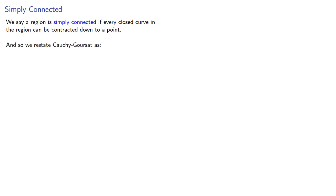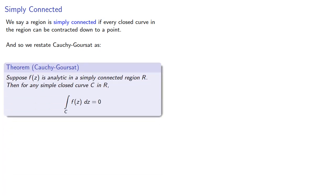So we restate Cauchy-Goursat as follows: Suppose f(z) is analytic in a simply connected region R. Then for any simple closed curve in R, the integral over that closed curve is zero.